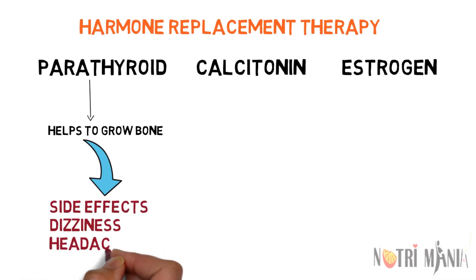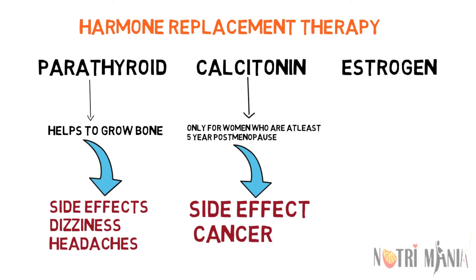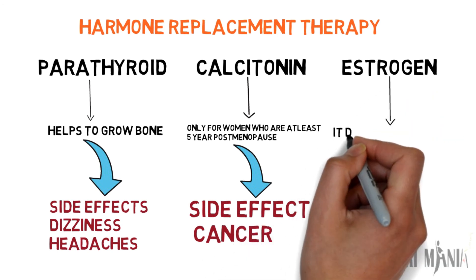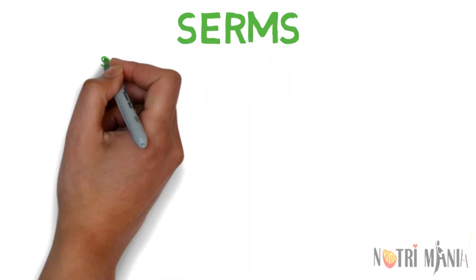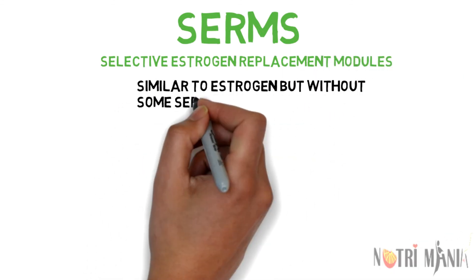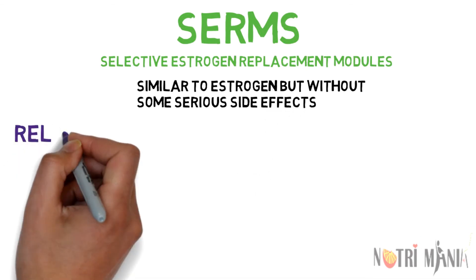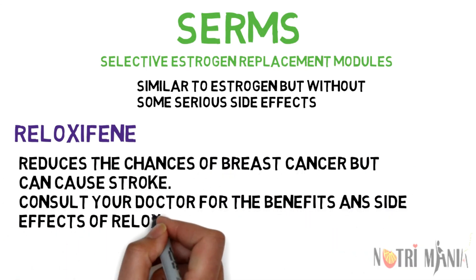Parathyroid hormone helps grow bones but has side effects like dizziness and headaches. Calcitonin is only for women who are at least five years post-menopause and is linked to cancer, so the FDA recommends it only when other treatments cannot be used. Estrogen replacement therapy has side effects like endometrial cancer, blood clots, breast cancer, and heart disease; the FDA suggests taking the smallest dose for the shortest possible time. Selective estrogen receptor modulators (SERMs) are similar to estrogen but without some serious side effects — raloxifene lowers the chances of breast cancer but can cause stroke.